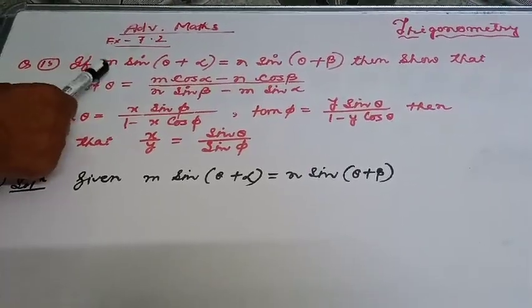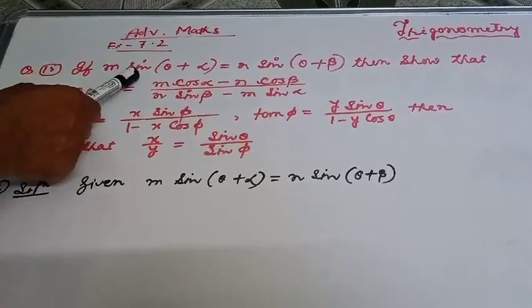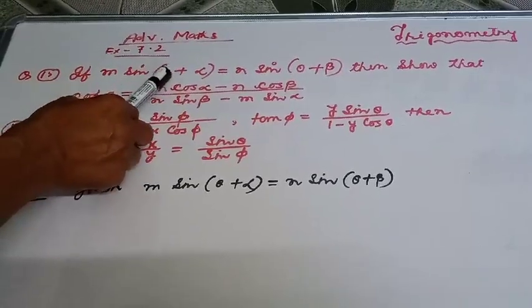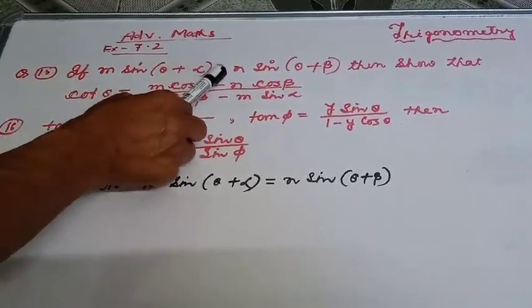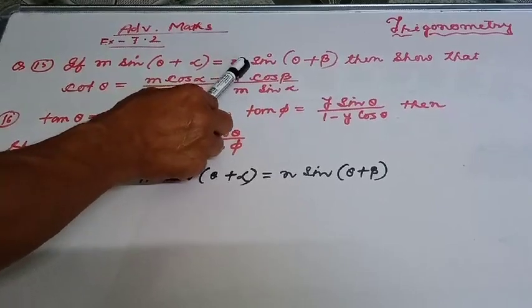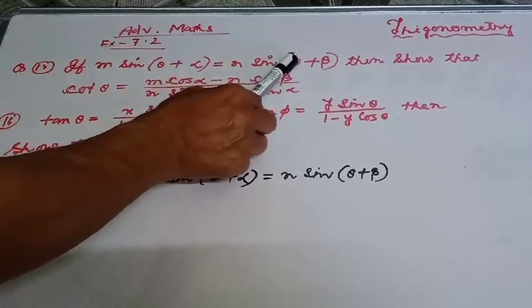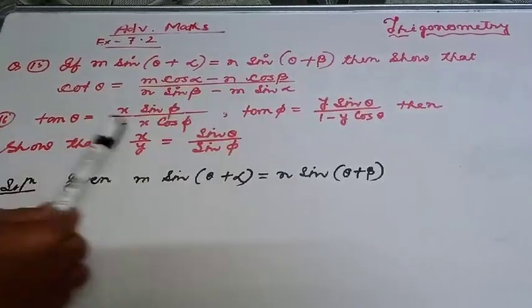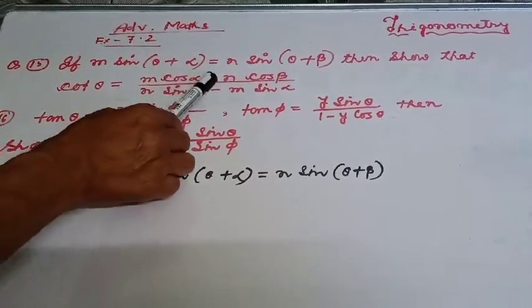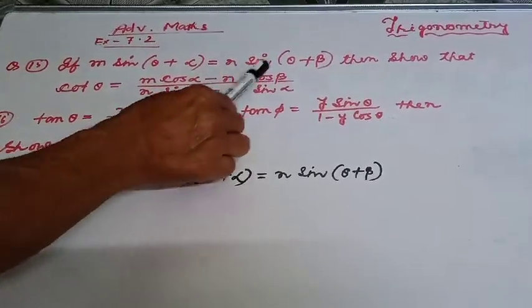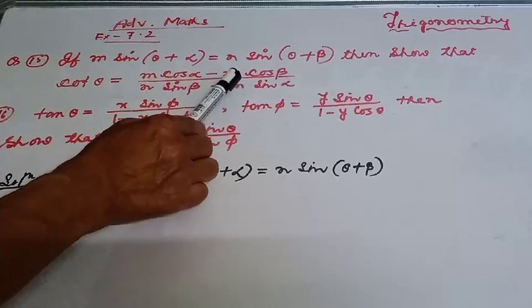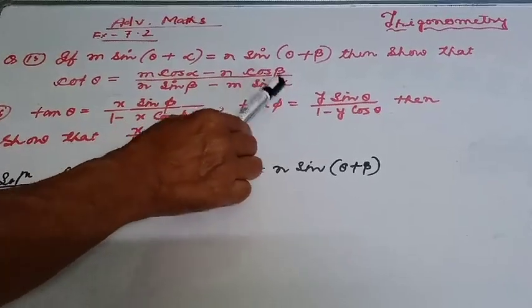If m·sin(θ + α) is equal to n·sin(θ + β), then prove that cot θ equals m·cos α minus n·cos β divided by n·sin β minus m·sin α.